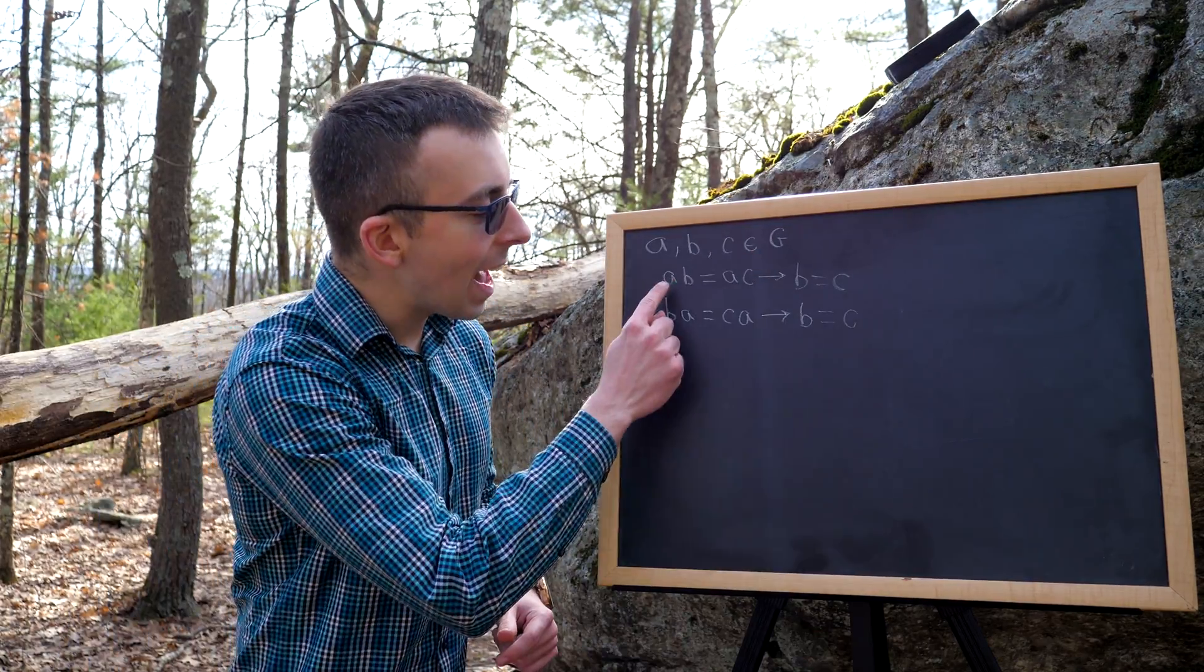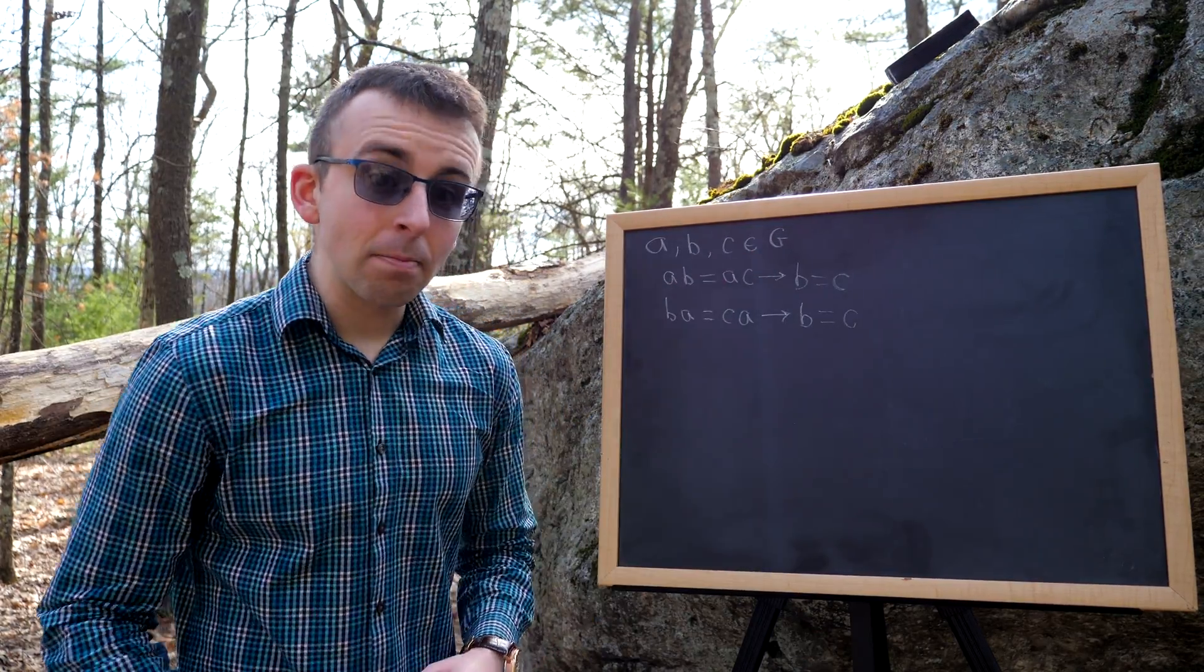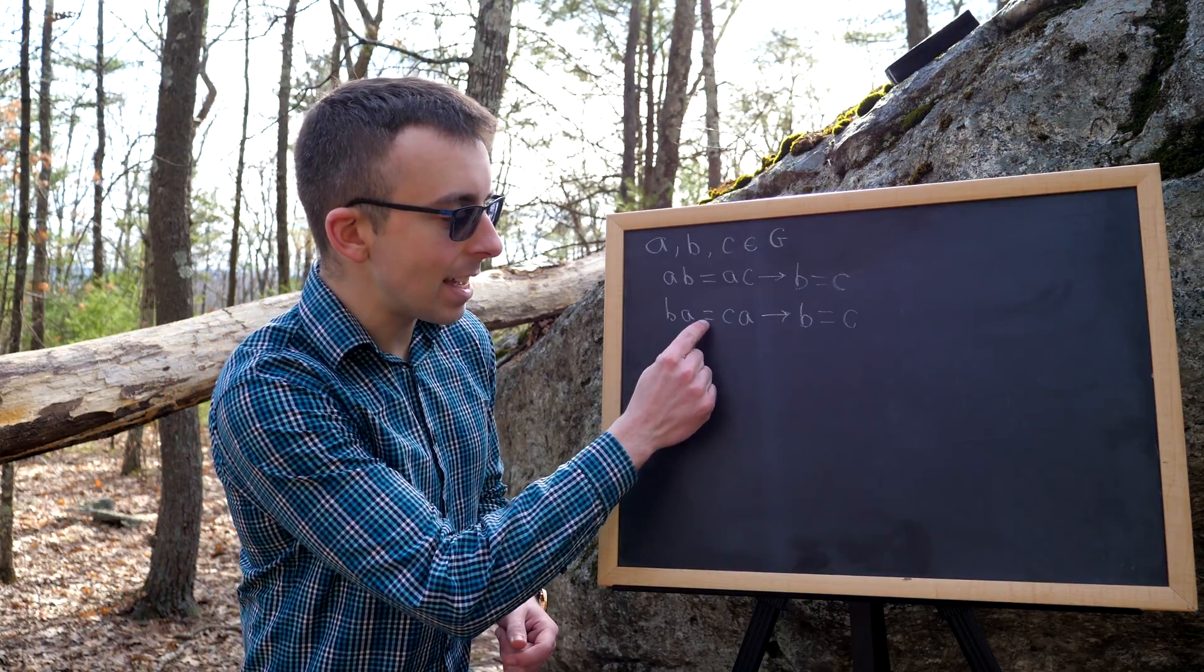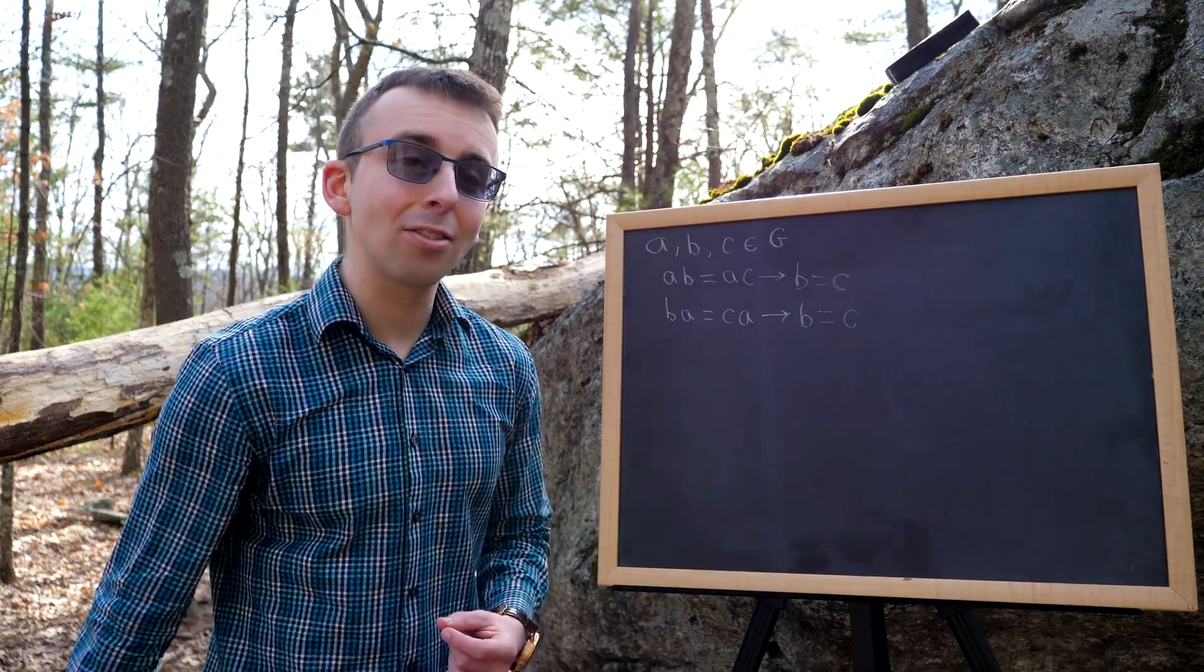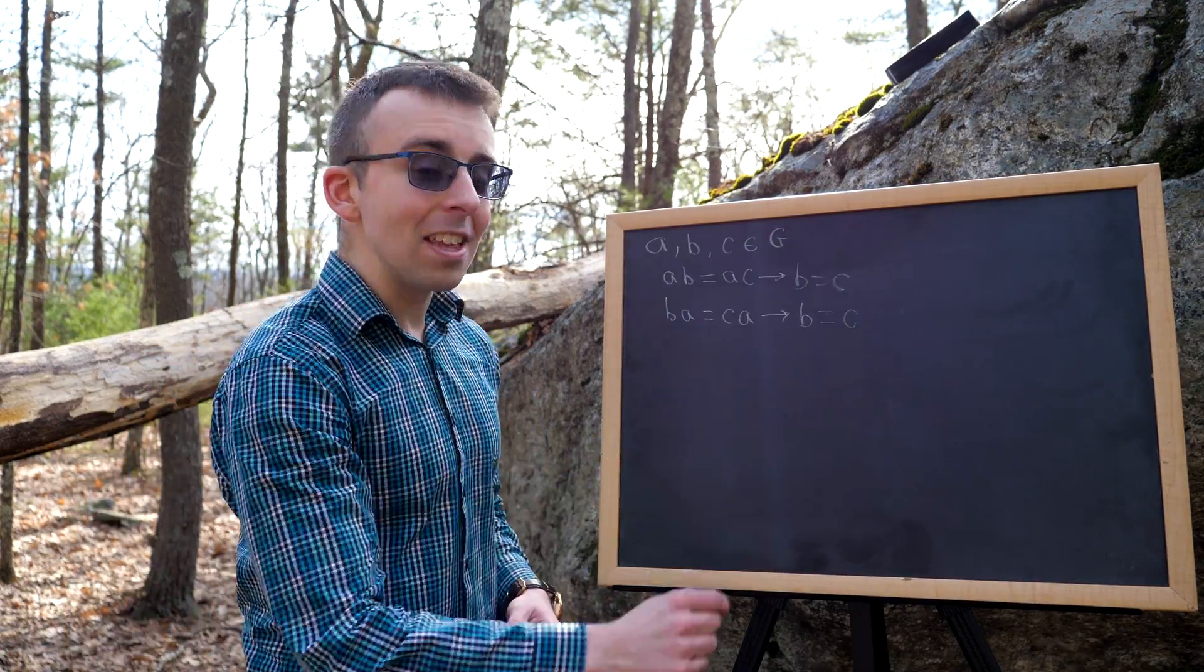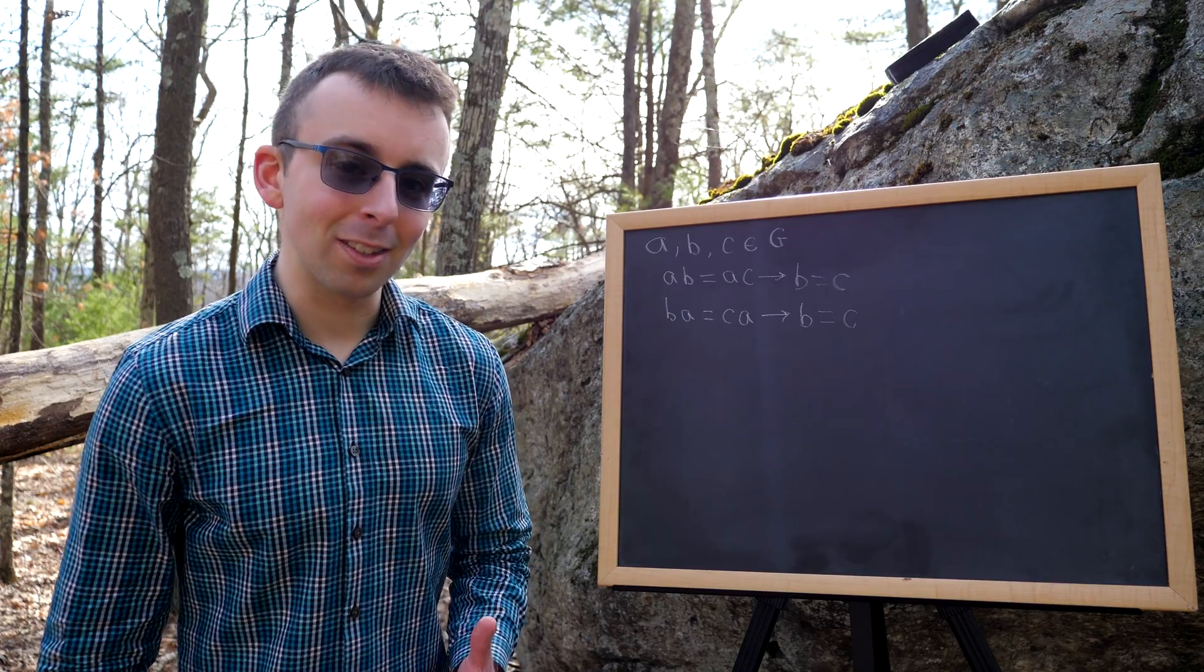and we know that AB equals AC, or we know that BA equals CA, we can cancel the A's on the left or cancel the A's on the right to conclude that B is equal to C.